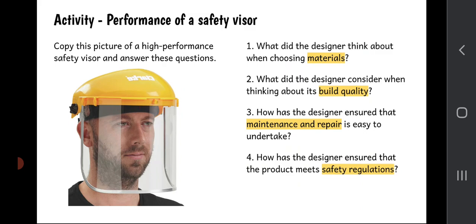And number four: how has the designer ensured that the product meets safety regulations? What did the designer have to go and look up to read? What did they have to do to their design to make sure that it meets safety regulations? So that's the activity: a really good drawing of the visor and your best answers on those four questions. You can pause the video now and get to it.